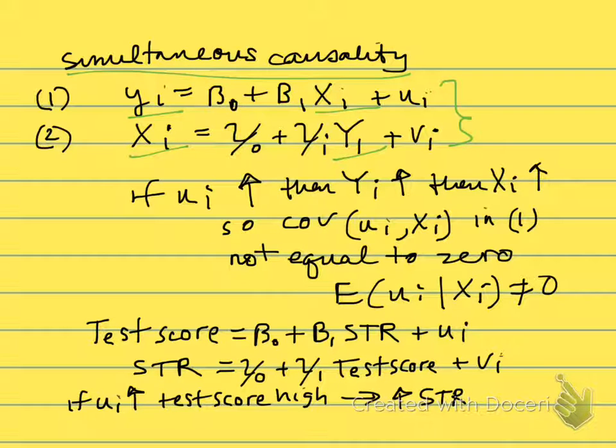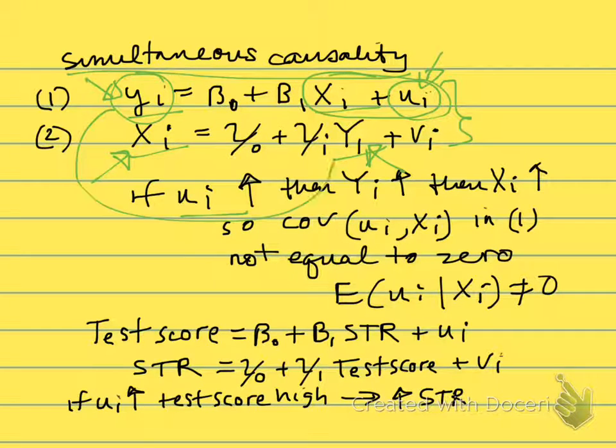If we think of it in terms of the econometric issue though, if the error term, if U is high in this equation, then the outcome Y is high. If the outcome Y is high, then X is high. And so we have a correlation between X and U. I'll say it again: if U is high, then Y will be high. But if Y is high, we plug it in here, we have a high Y, we get a high X. So now we have this correlation between X and U.